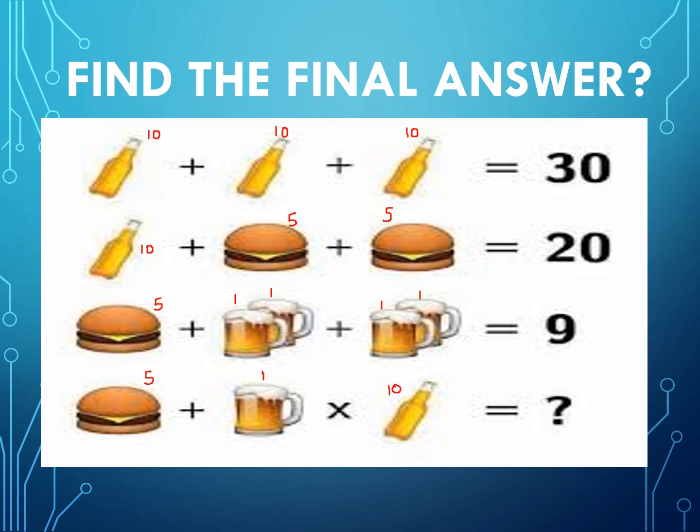BODMAS or PEMDAS rule we can apply here. Burger is 5, glass has value 1, and bottle has value 10. So we are applying the rule - the multiplication first. So it is 5 plus 10, this equals 15.